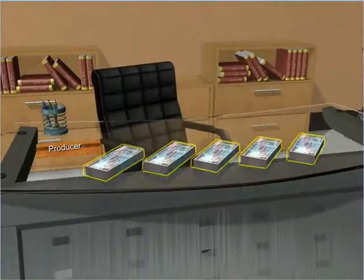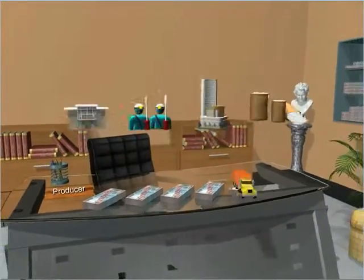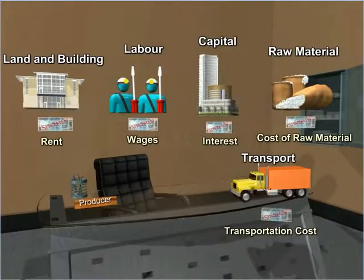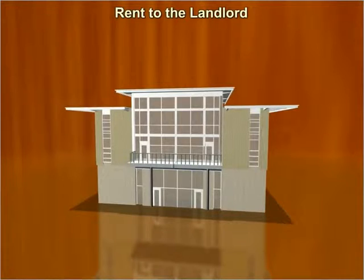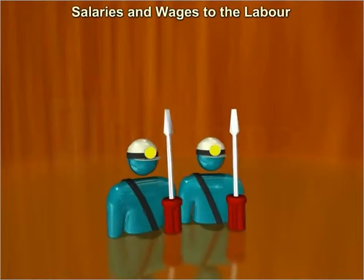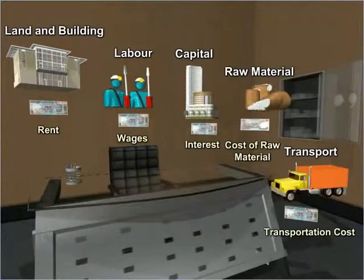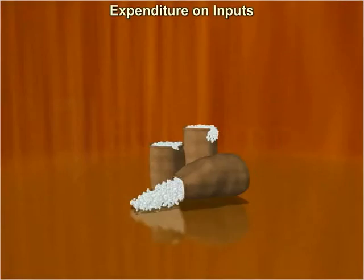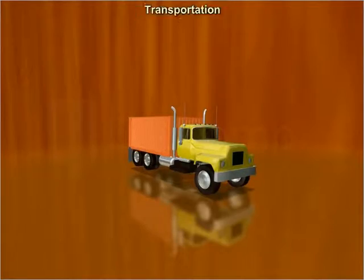Cost may be defined as the money expenditure incurred by the producer either directly or indirectly for hiring the services of factors of production or for buying the raw material in order to carry out the production process. The firm spends money in the form of rent to the landlord, salaries and wages to the labor, interest to the capitalist, and spends on other inputs like raw material, transportation, etc.